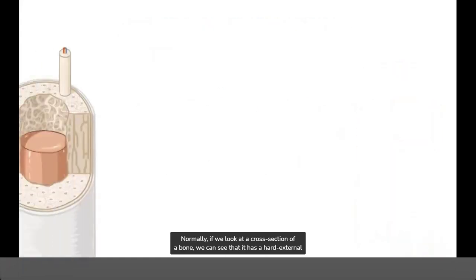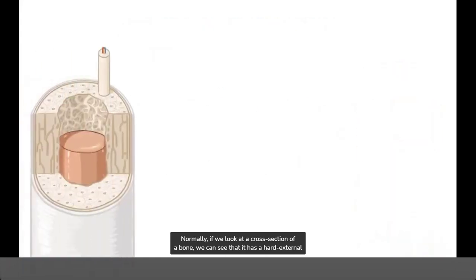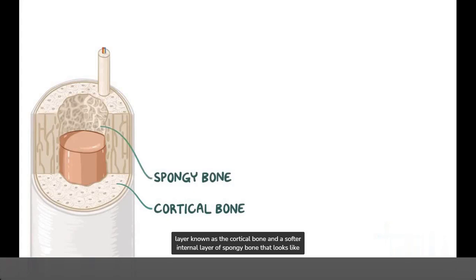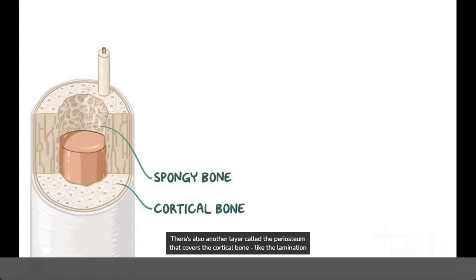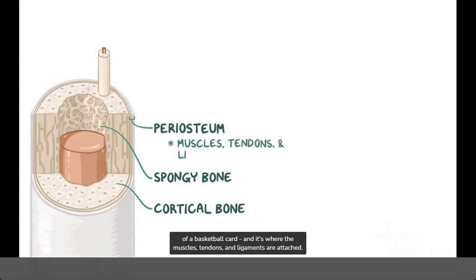If we look at a cross-section of a bone, we can see that it has a hard external layer known as the cortical bone and a softer internal layer of spongy bone that looks like honeycombs. There's also another layer called the periosteum that covers the cortical bone, like the lamination of a basketball card, and that's where the muscles, tendons, and ligaments are attached.